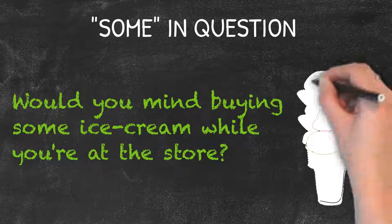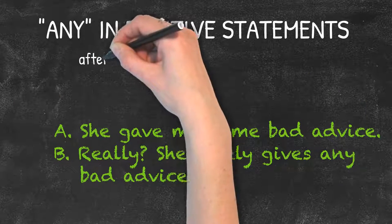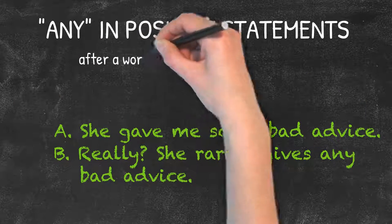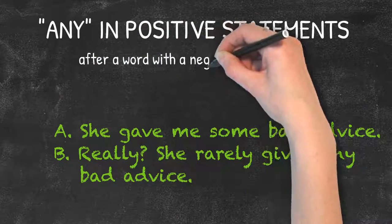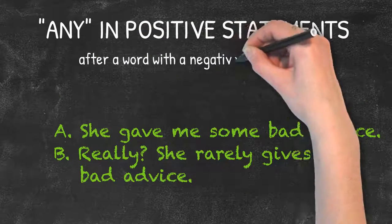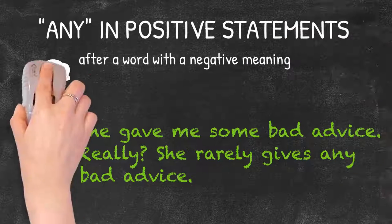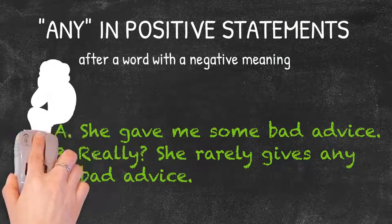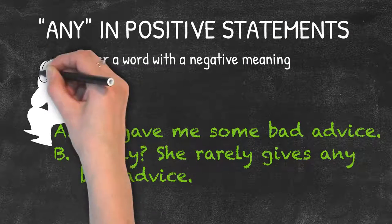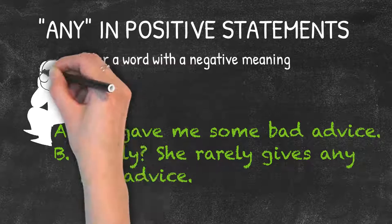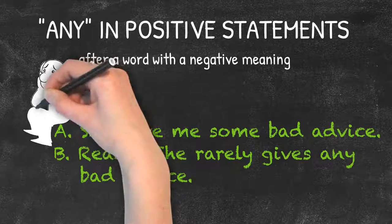You can also use any in a positive statement if it comes after a word whose meaning is negative or limiting, such as here. A: She gave me some bad advice. B: Really, she rarely gives any bad advice.